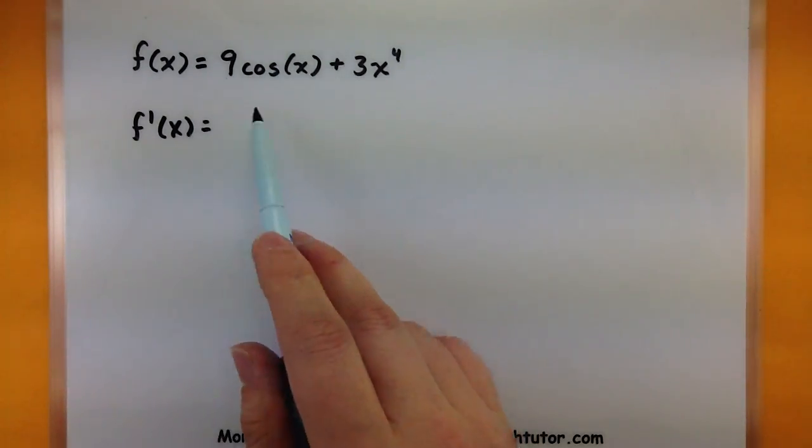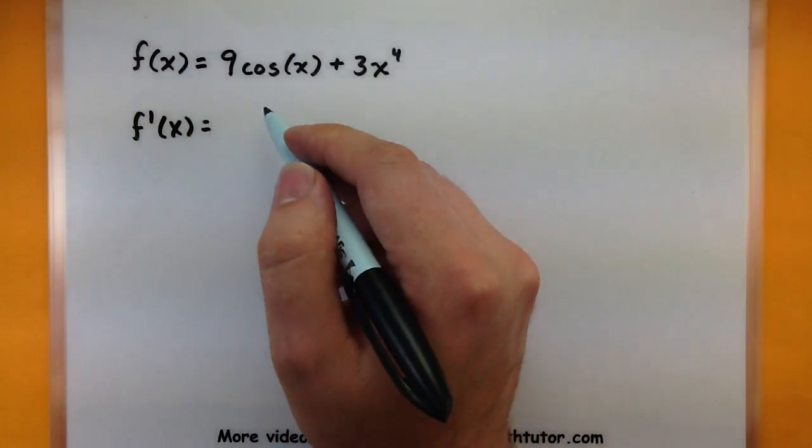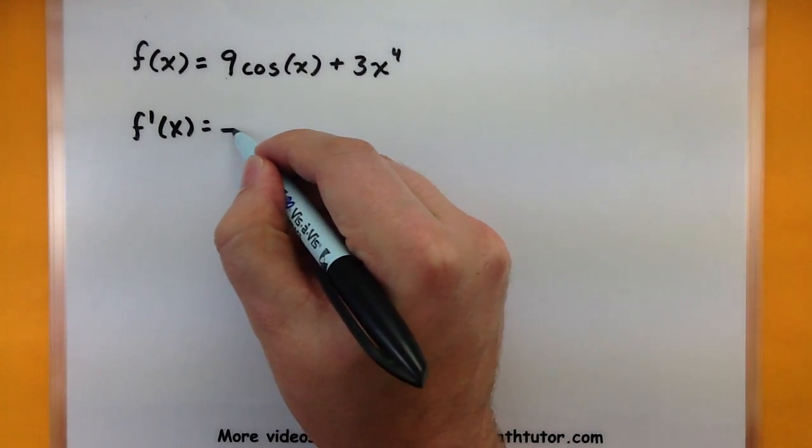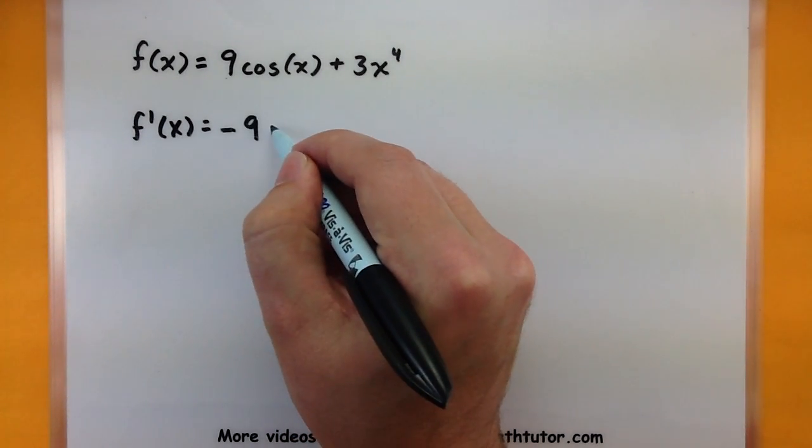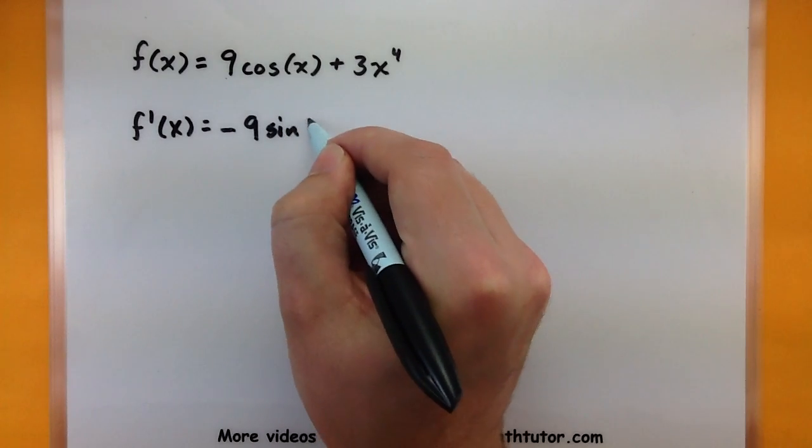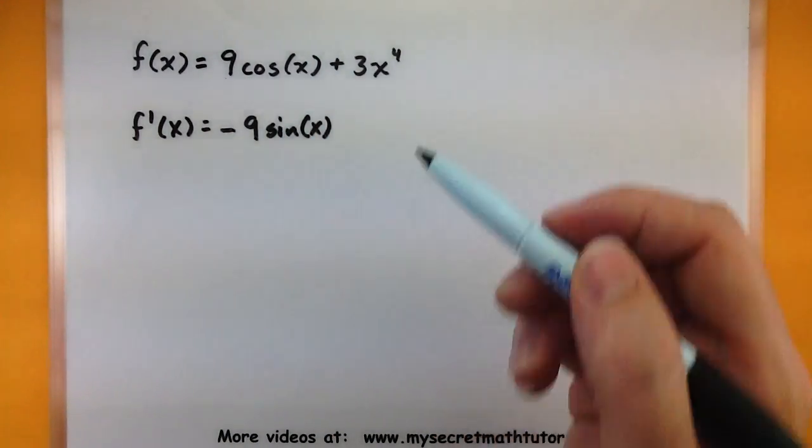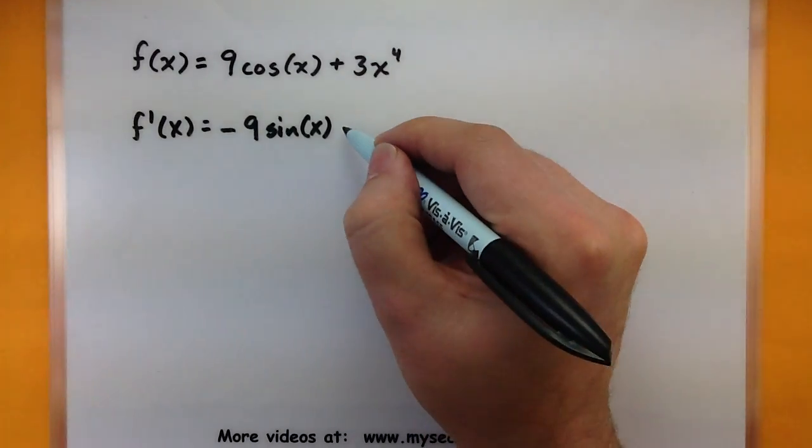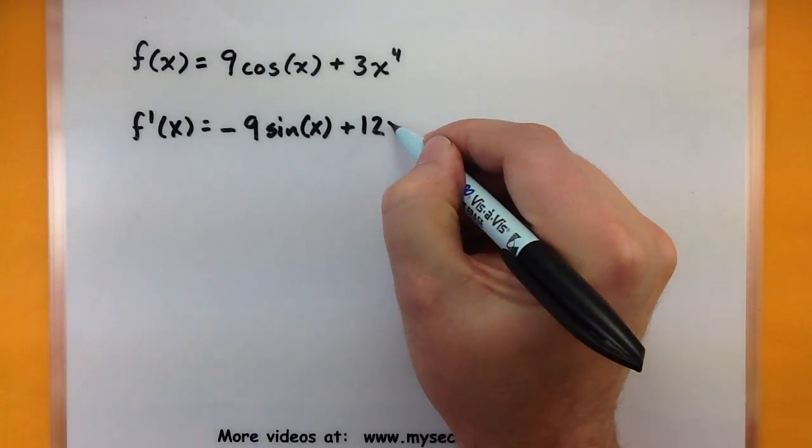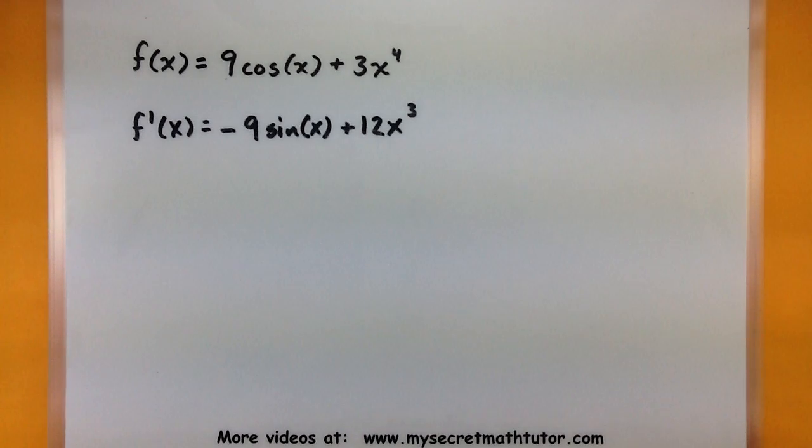So now I need to figure out what is the derivative of cosine. It's negative sine. And go ahead and write your negative sign all the way out in front. So the derivative of cosine, negative sine. Now we take the derivative of this piece just like we would before plus 12x to the third. And now this one's done.